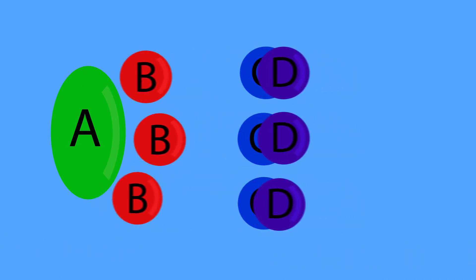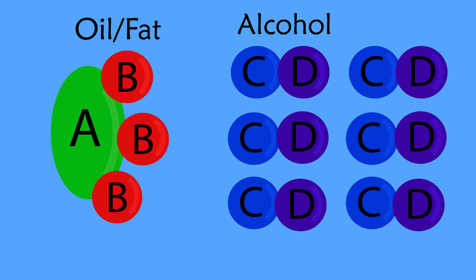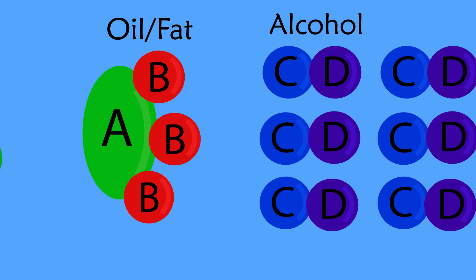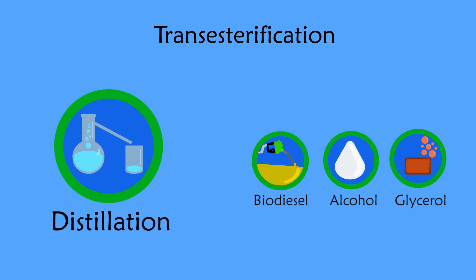Although there is a 3 to 1 molar ratio of alcohol to oil to satisfy a complete reaction, a 6 to 1 molar ratio is usually used to drive the reaction to the product side. The excess alcohol that was not used in the reaction separates partly with the fuel and partly with the glycerol at the end of the process, and can be recovered and reused through a process of distillation.